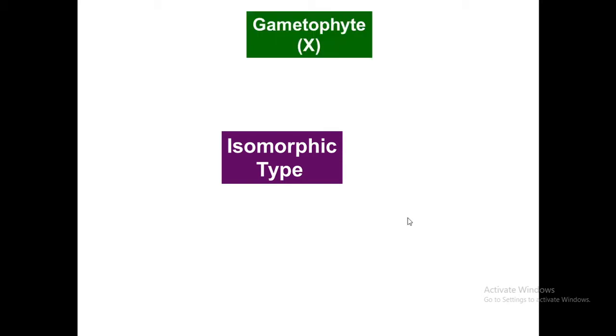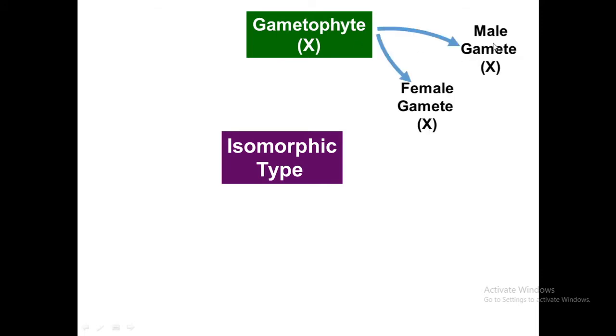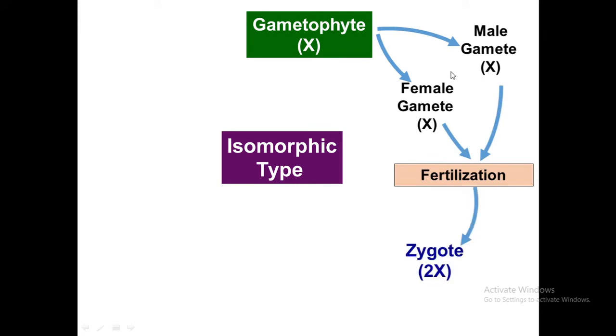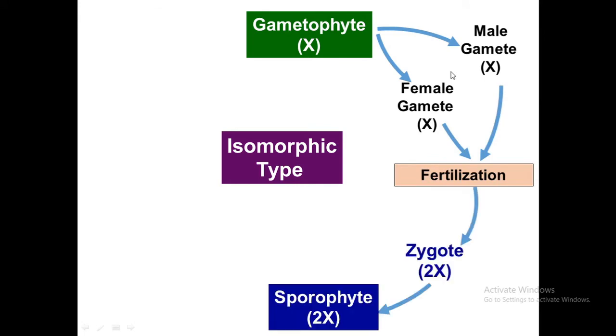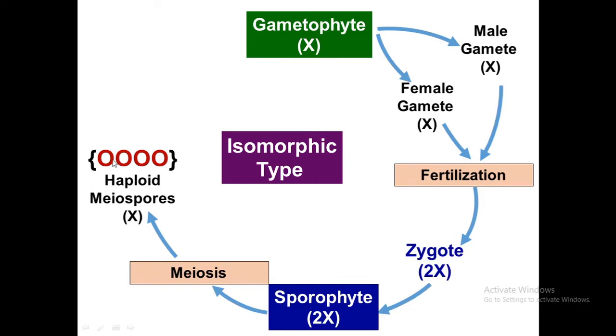Laminaria is the best example to study the heteromorphic type of life cycle. An isomorphic type life cycle starts with a haploid gametophyte which produces male and female gametes. After fertilization, they form a zygote, which develops into a sporophyte — a diploid structure. Meiosis occurs in the sporophyte to form haploid meiospores, and after germination of those meiospores, it gives rise to a haploid gametophytic stage.